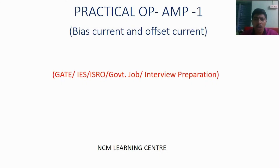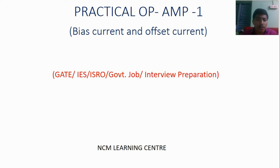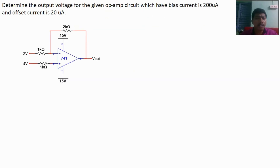I am going to solve an operational amplifier problem in which practical data — bias current and offset current — is given. I already posted three problems related to ideal operational amplifier concepts. If doubts arise while watching, refer to the previously posted videos or comment; you will get answers. Now we will go to this problem.